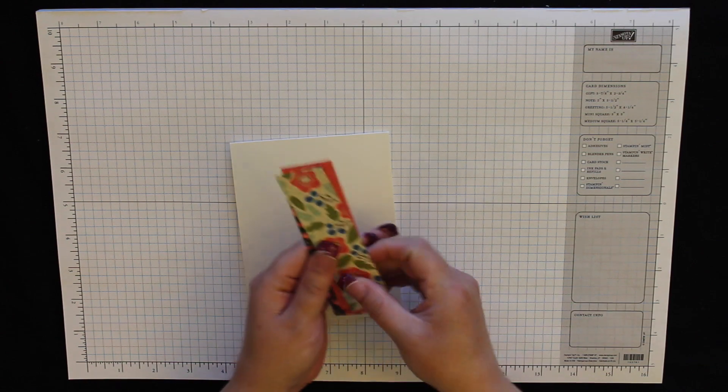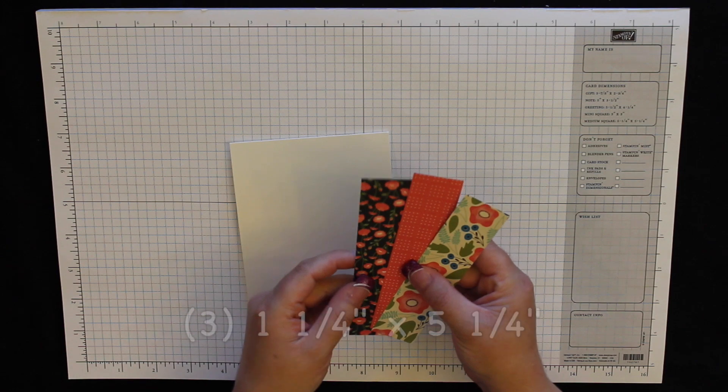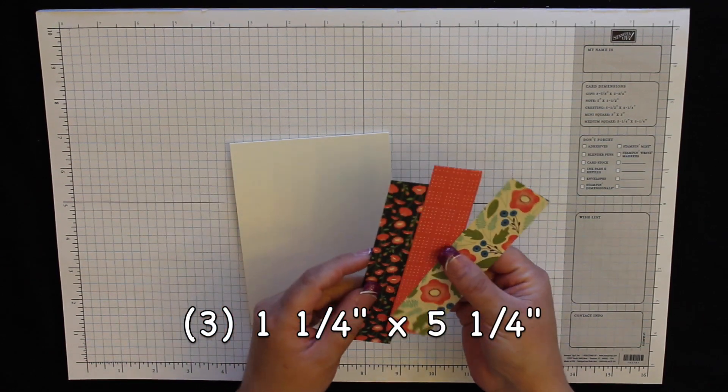Now the card has three strips of designer series paper. This comes from the Pretty Petals designer series paper stack and each of these measures one and a quarter by five and a quarter inches.